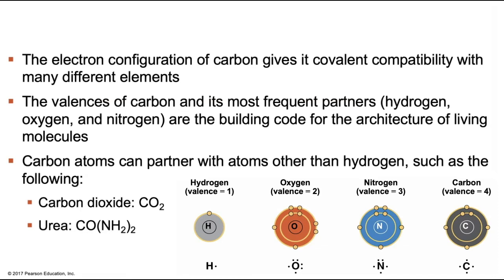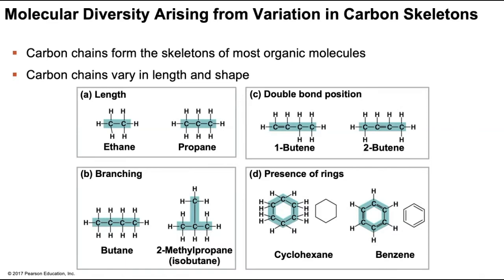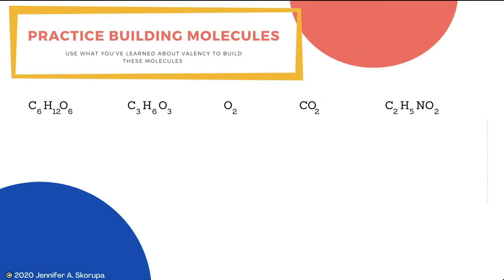You now have all the information needed to build the molecule urea — take a minute and give it a try. Keep in mind the valence for carbon, oxygen, nitrogen, and hydrogen — that's the number of bonds each can form — and make sure you form that amount of bonds. When you're done, look up the structure and compare to what you've made. As we dive further into how to build organic molecules, remember this rule when building molecules: always start with carbon, followed by nitrogen, then oxygen, and lastly fill in the hydrogens.